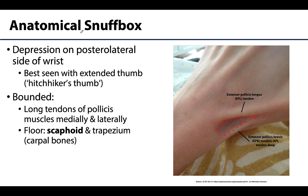The anatomical snuff box is formed by long tendons of the first digit on the posterior side. The tendon of the extensor pollicis longus (EPL) forms the medial border — usually the easiest one to see, with a kind of ridge. The lateral border is formed by the extensor pollicis brevis (EPB) and the abductor pollicis longus (APL), with the APL usually a bit deeper. These are long pollicis, or first digit, tendons.